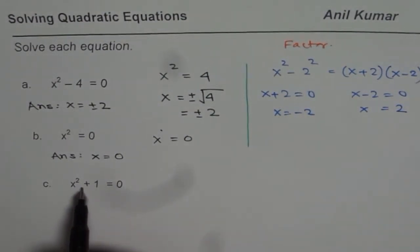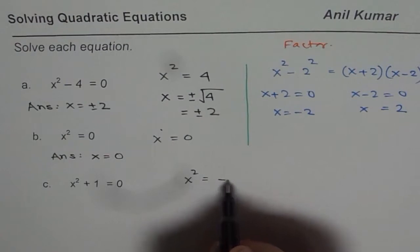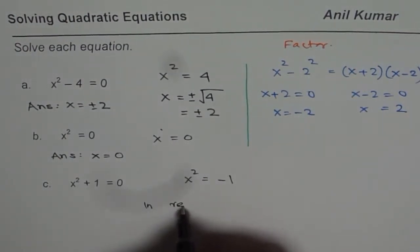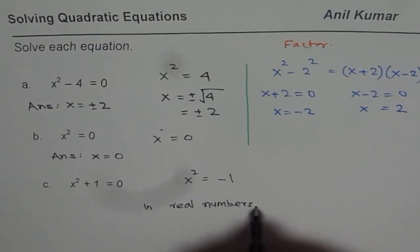Now the last one here is x square plus 1 equals to 0. If we try to solve this, we'll get x square equals to minus 1. In real numbers,